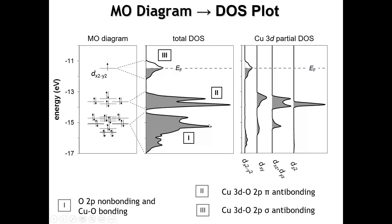One last thing about the density of states diagram: consider the relative areas of the regions. Regions II and III both come from the copper d orbitals, but in region II we have four copper d orbitals contributing, whereas in region III we only have one. So the area of region III should be only one-fourth as big as region II. For region I, the dominant orbital contributing is the oxygen 2p. There are two oxygens per copper, and each oxygen has three 2p orbitals, so there should be a total of six bands in this region — about 50% more area than region II.